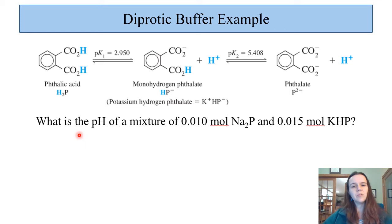For example, if we look at phthalic acid H2P, where P stands for phthalic instead of phosphorus, we can ask ourselves what the pH would be if we mixed 0.01 moles of Na2P and 0.015 moles of KHP. One of the important things to notice is that the compounds have salt ions, so sodium 2P means that we have P2-. So this is sodium phthalate and KHP. The K is +1, which means that we're talking about HP-. So that is our intermediate.